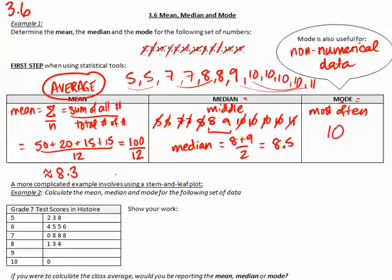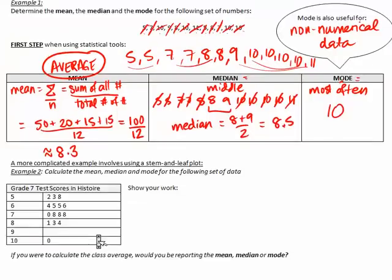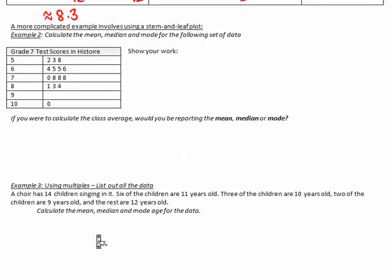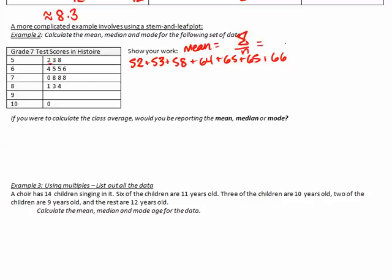A more complicated example involves using a stem-and-leaf plot. Here we have grade 7 test scores in Histoire. The question is: calculate the mean, median, and mode for the following set of data. I will look at the lowest number — say 52 is the first number — and keep adding up all those numbers. I'll just pause the video and skip ahead so the numbers will be done. You can keep working on your own to see if you get the same answer. I'm putting in the formula sigma over n, which means the total sum of the numbers over the total number of numbers.